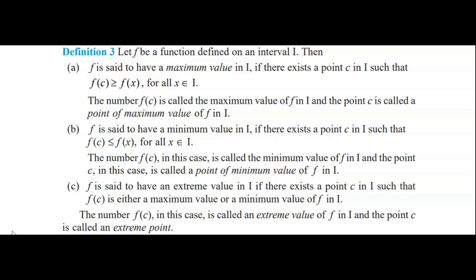f is said to have an extreme value in I if there exists a point c in I such that f(c) is either a maximum value or a minimum value of f in I. The number f(c) is called an extreme value of f in I, and the point c is called an extreme point.